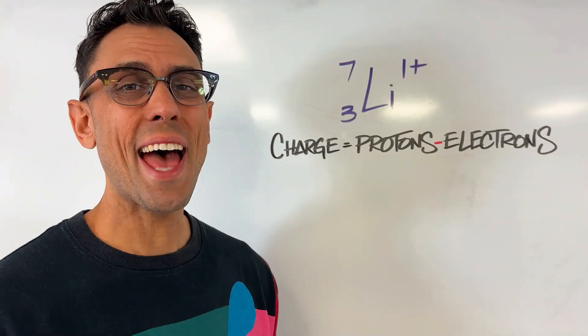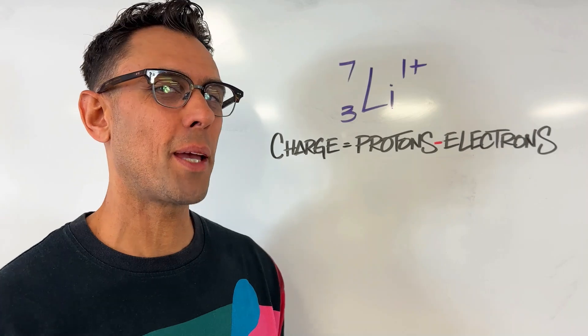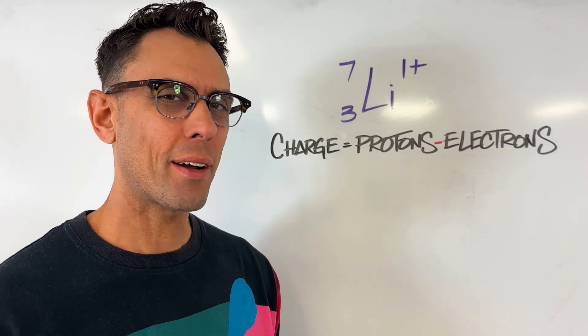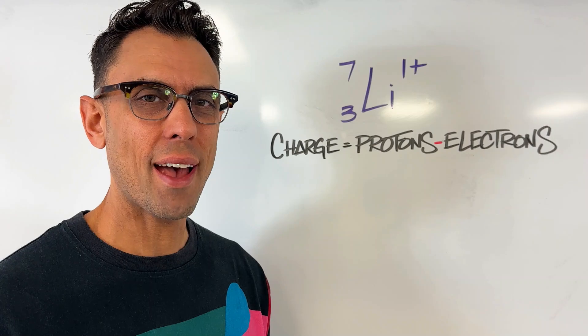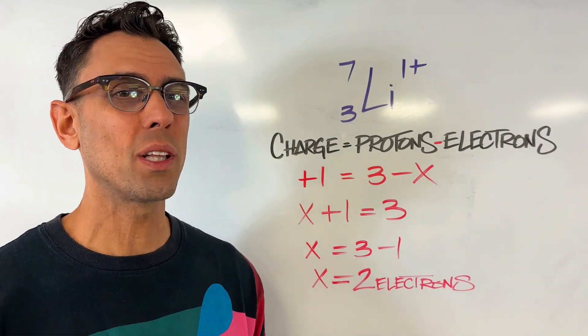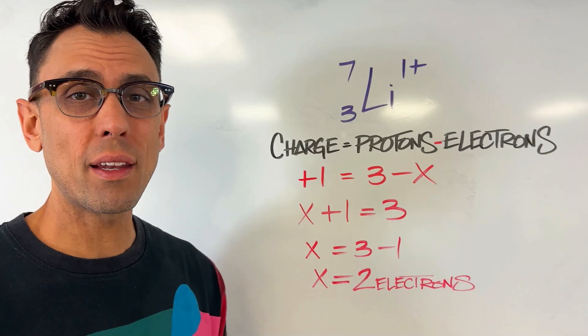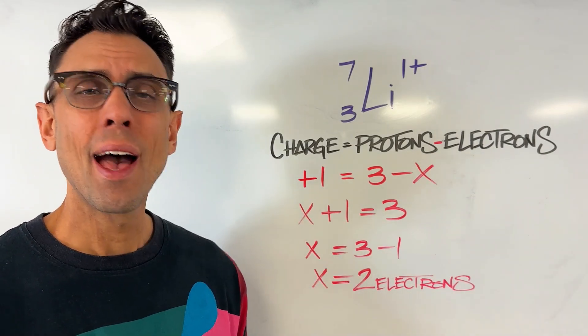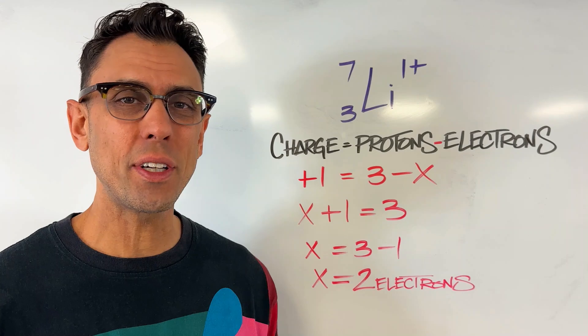This atom of lithium does not have the same number of protons and electrons. Take a moment and figure out how many electrons it actually has. The answer is, this lithium atom only has two electrons. One fewer than the number of protons, which is why it has a positive 1 charge.